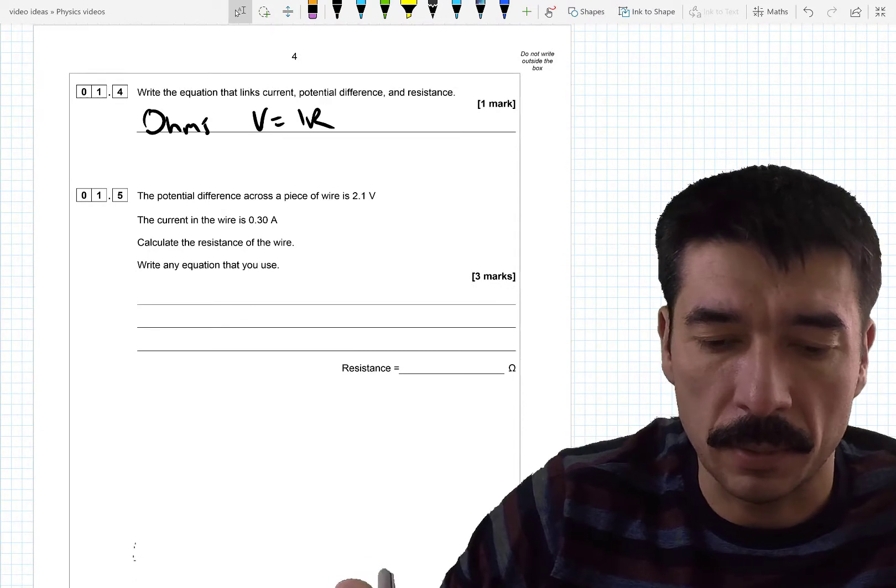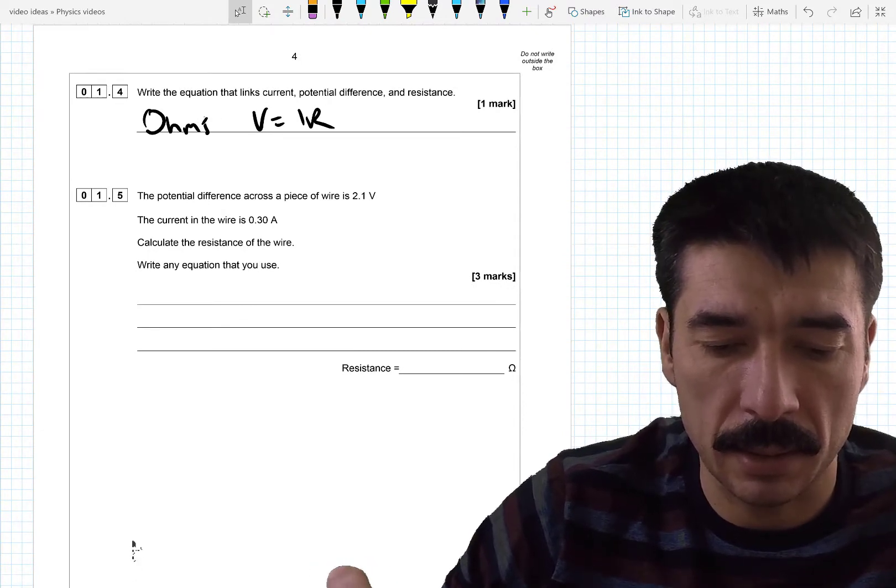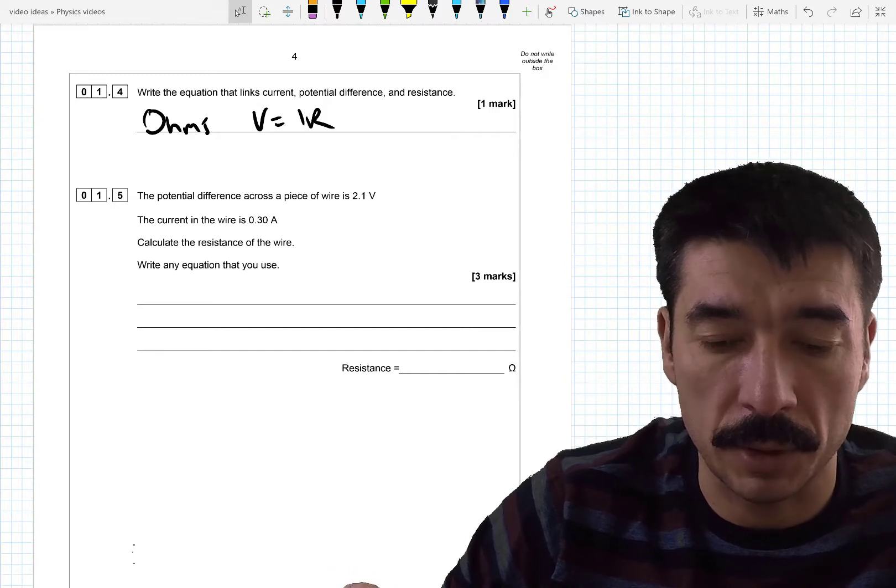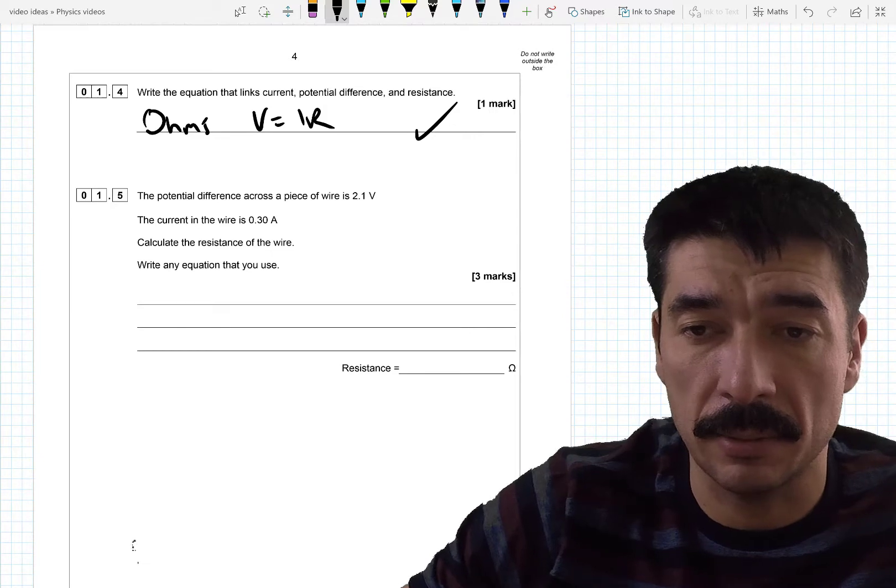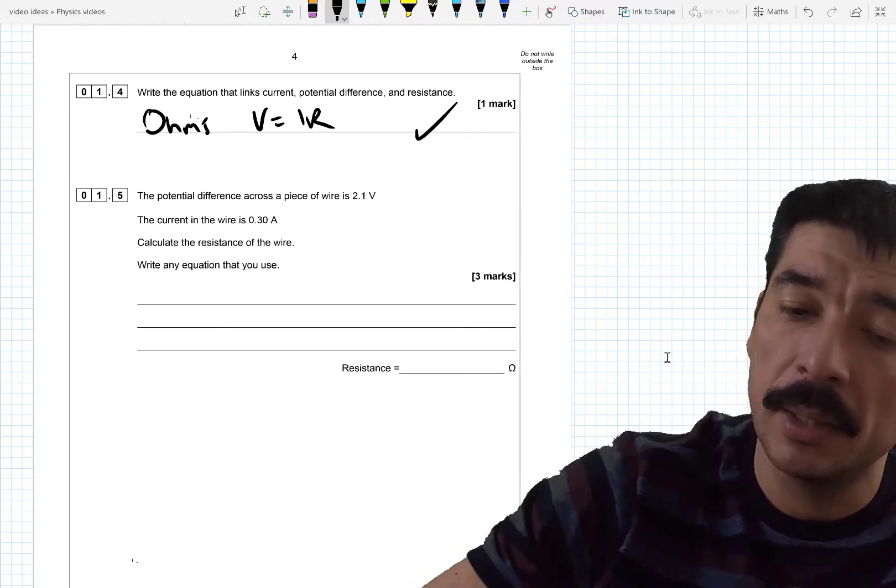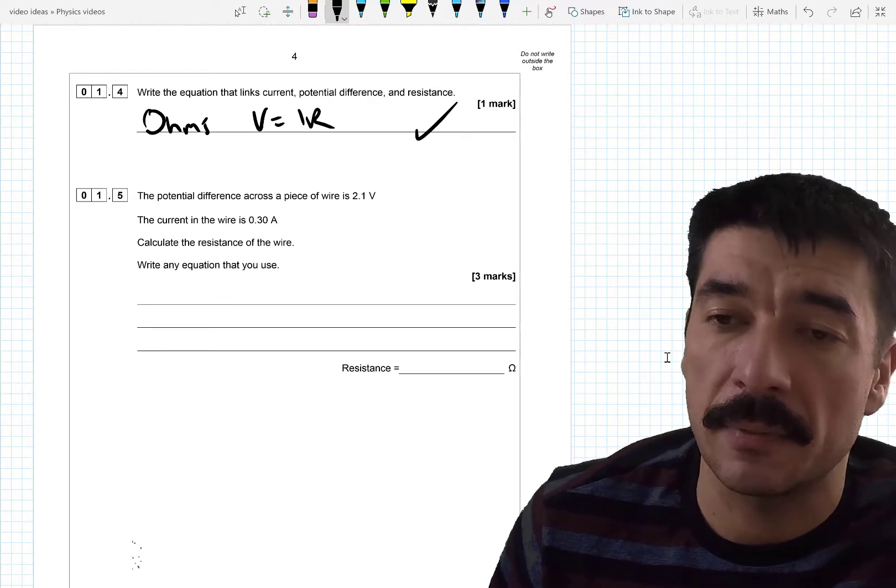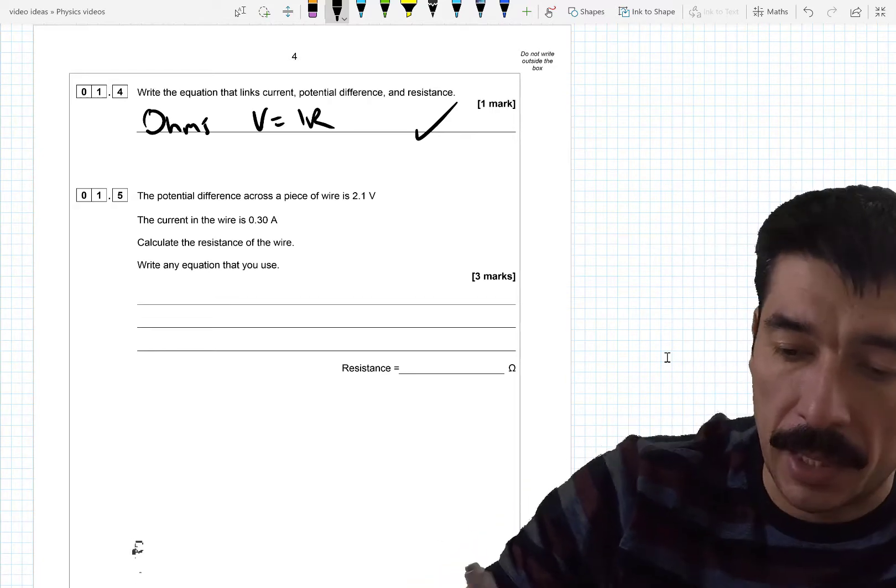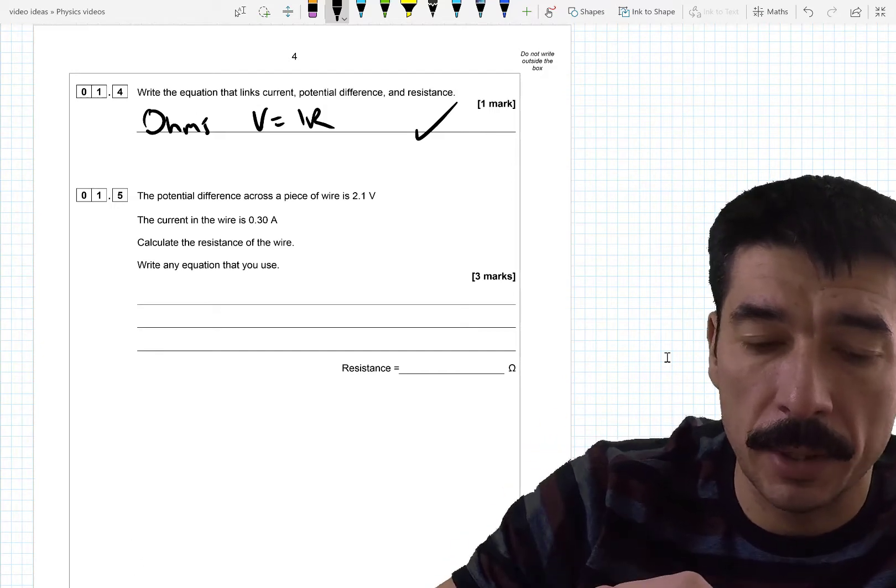The potential difference across a piece of wire is 2.1 watts. The current is 3 amps. Calculate the resistance of the wire right in the equation you use. So you wouldn't be given this equation. You're getting immediately an opportunity to gain marks just from memory here. Knowing the equation Ohm's law, V equals IR. Where I is current, R is resistance and V is voltage. And then again you're going to get another mark for using it here. So definitely you need to learn some equations.